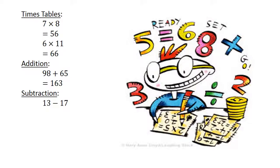Subtraction. 30 minus 17 equals negative 4.